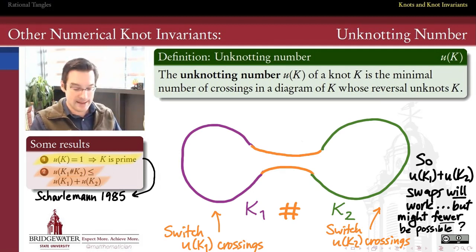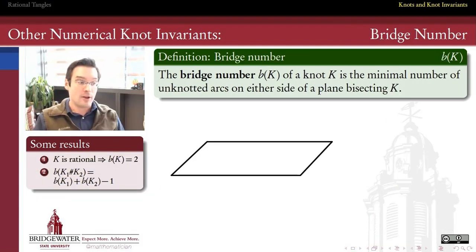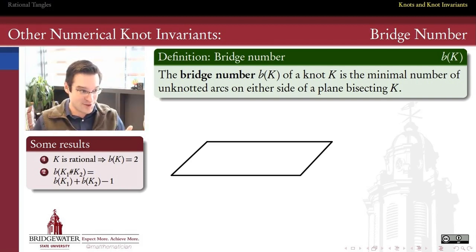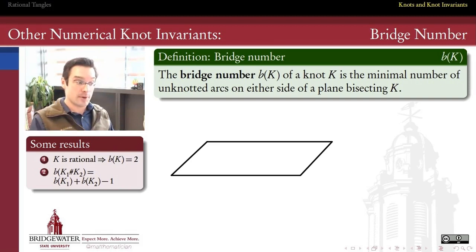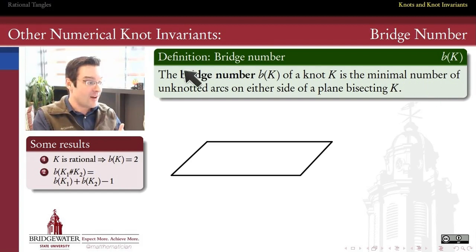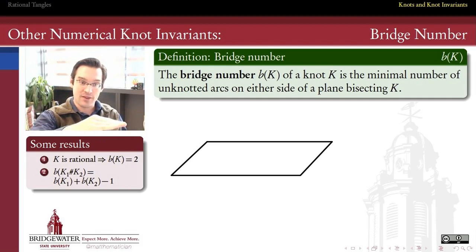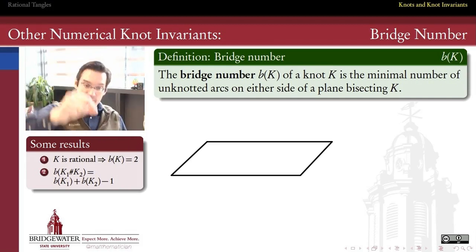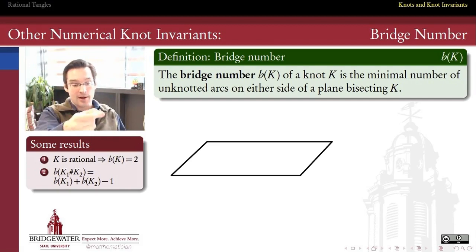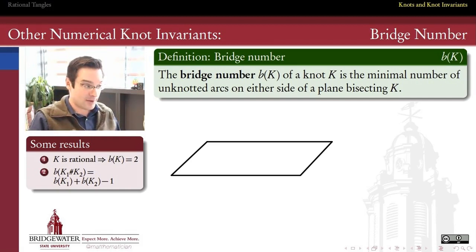So that's the unknotting number. The next numerical invariant is called the bridge number. This one is interesting because it has neat three-dimensional pictures we can associate with it. The definition of the bridge number of a knot is the minimal number of unknotted arcs that lie on either side of a plane that bisects the knot. We think of the knot living in three dimensions, slice it with a plane in the middle, and that cuts the knot into arcs going up and down over that plane. The minimal number of such arcs is called the bridge number.